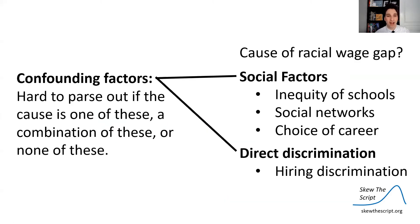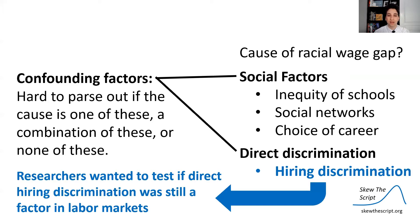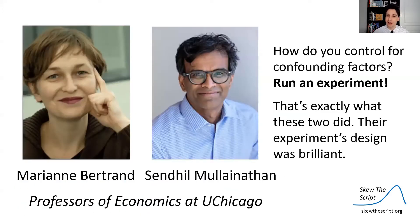These are all considered confounding factors. It's hard to parse out what might be the cause. Is it one of these? Is it multiple of these? Is it none of these at all? So researchers wanted to test specifically, is there still hiring discrimination in the marketplace? Direct discrimination in the job hiring process? And these two brilliant economists ran an amazing experiment that had a brilliant design to test this. And here's what they did.